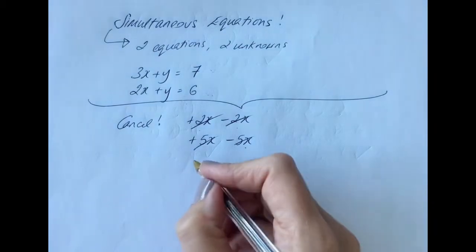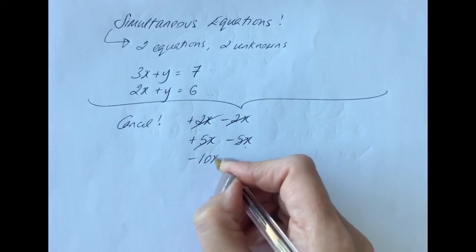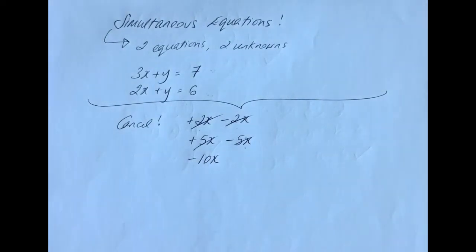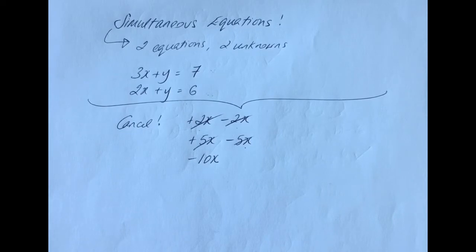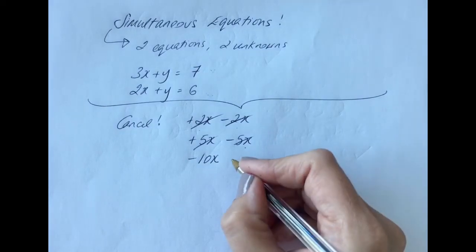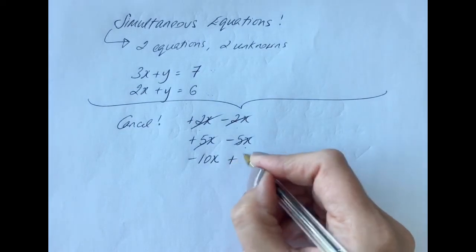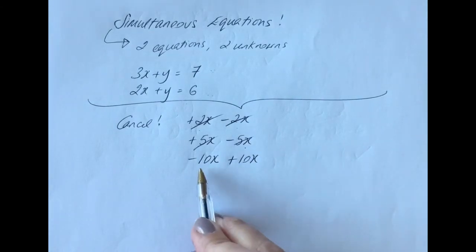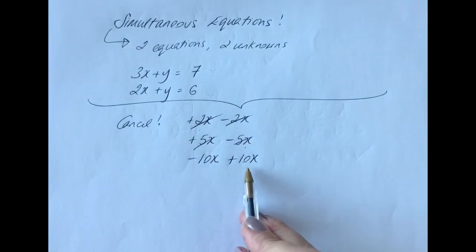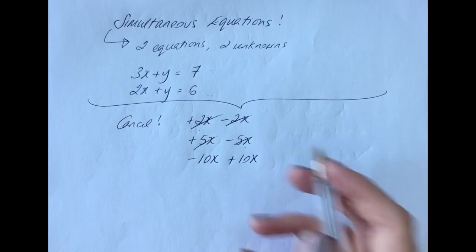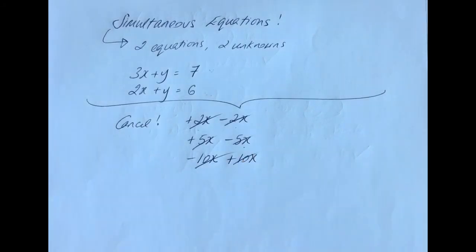If you had a minus 10x and wanted to cancel it, you would need to add 10x. Minus 10x plus 10x gives you zero, so it cancels out.